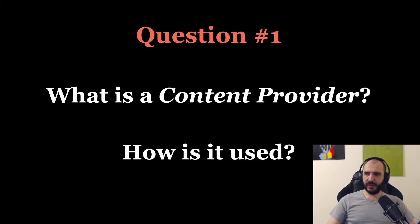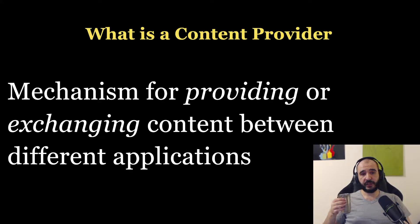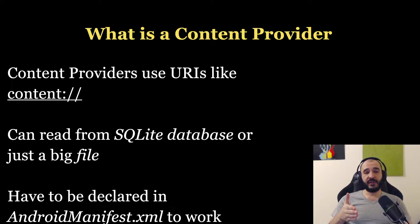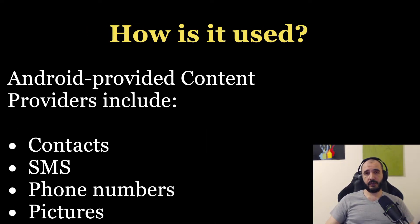So now it's going to be a new set of questions. What is a content provider? Can you tell me how it is used? It's a mechanism for providing or exchanging content between different applications. A content provider uses URIs; it can read from an SQLite database or a binary file. You have to declare it in the Android manifest for it to work. You'd use a content provider for contacts, SMS, phone numbers, or pictures.